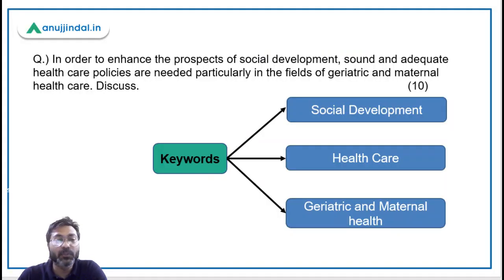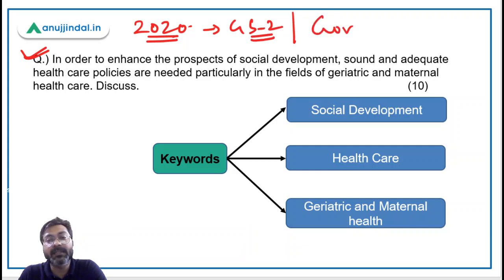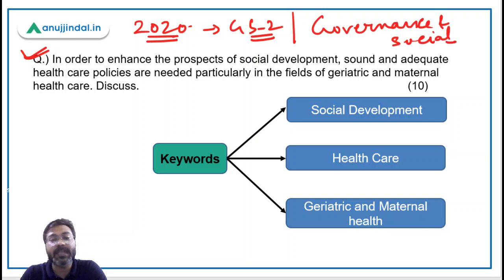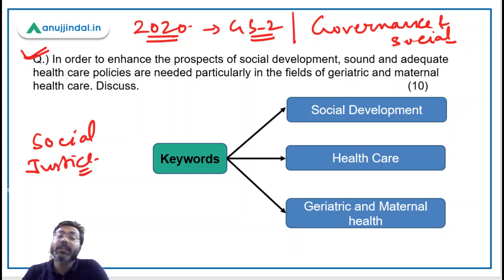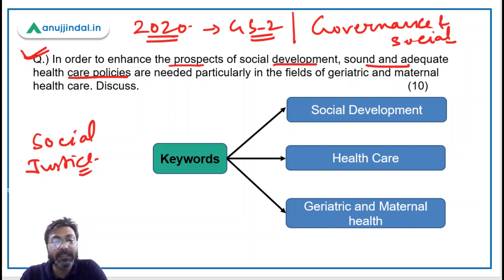Let's begin with the session. This question was asked in the year 2020 mains exam, GS2 paper, and it is from the governance and social justice part — more precisely from the social justice part of GS2 paper. The question is: 'In order to enhance the prospects of social development, sound and adequate healthcare policies are needed, particularly in the fields of geriatric and maternal healthcare. Discuss.'